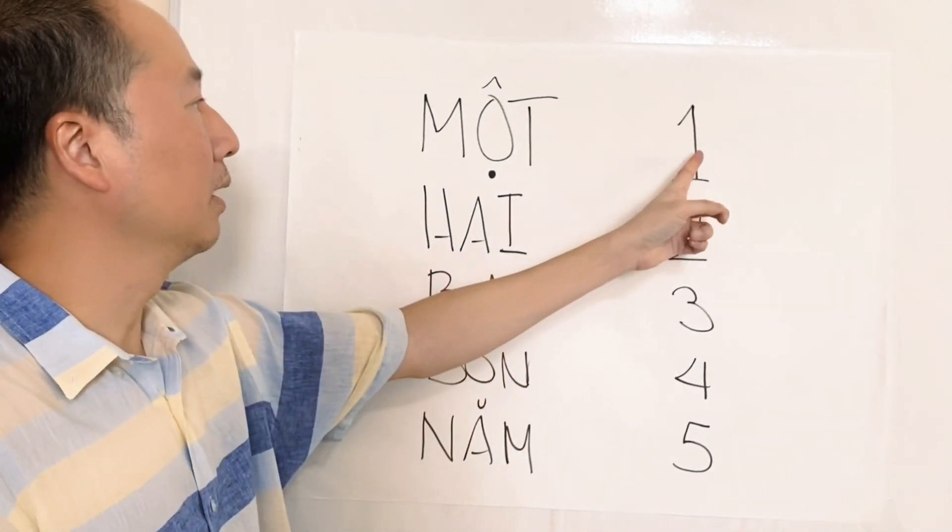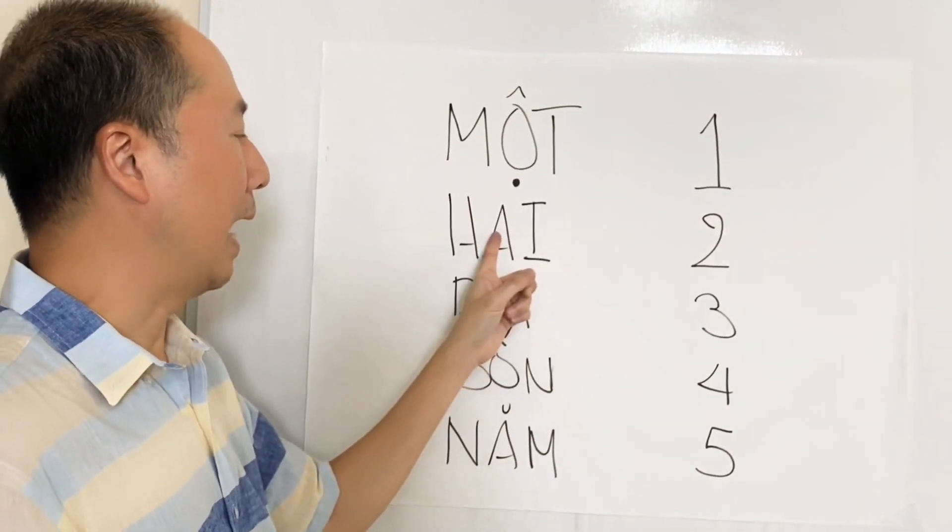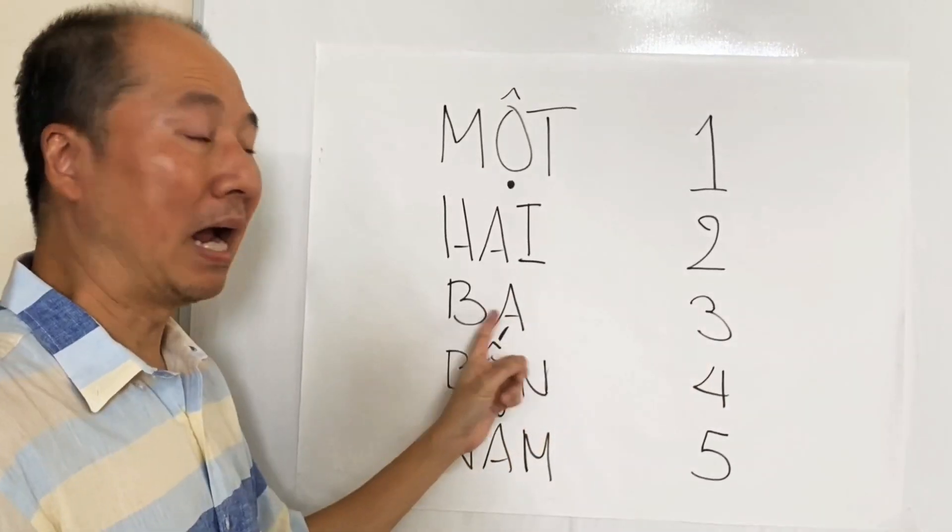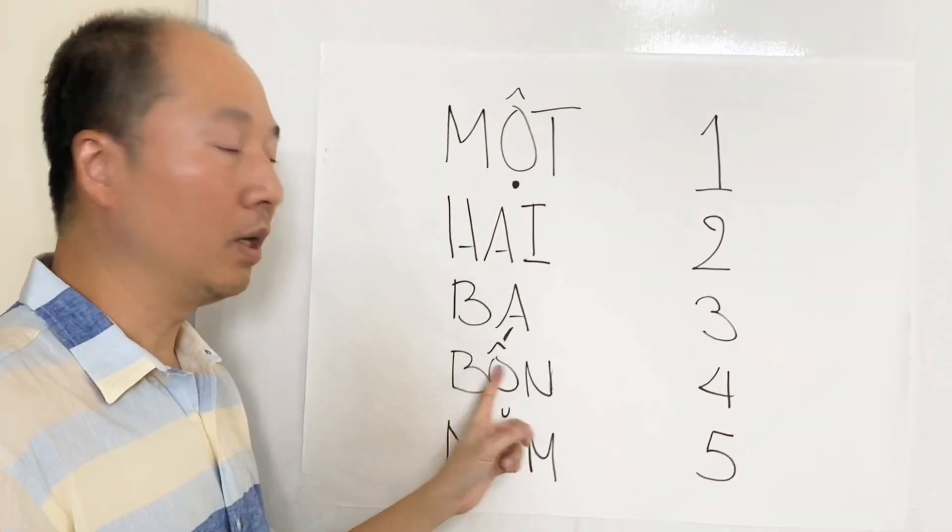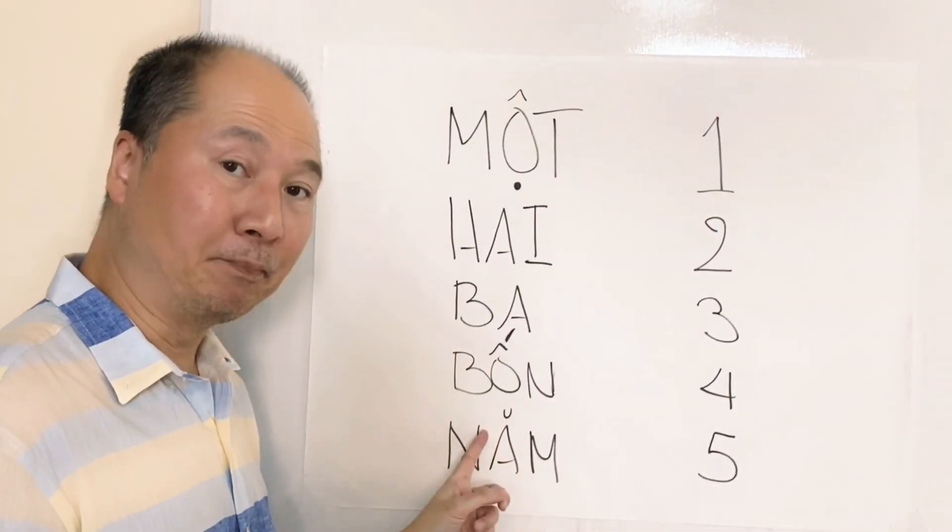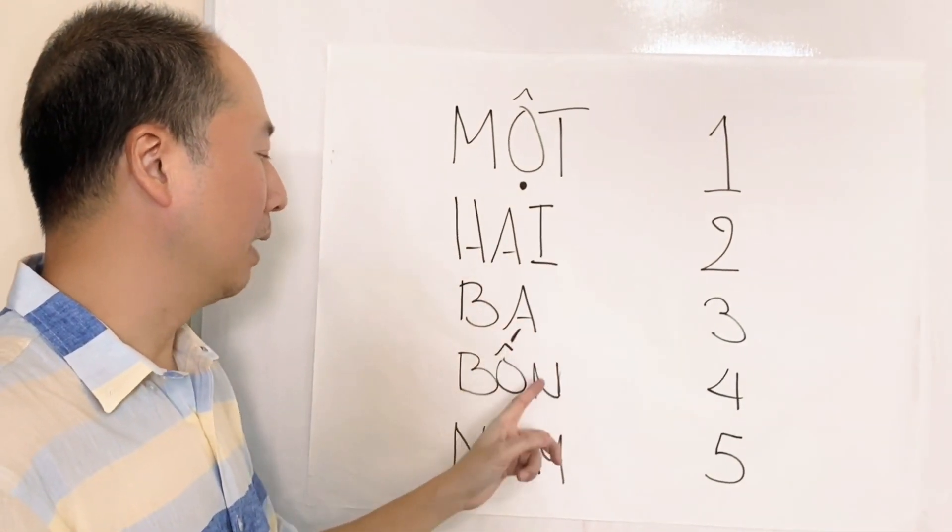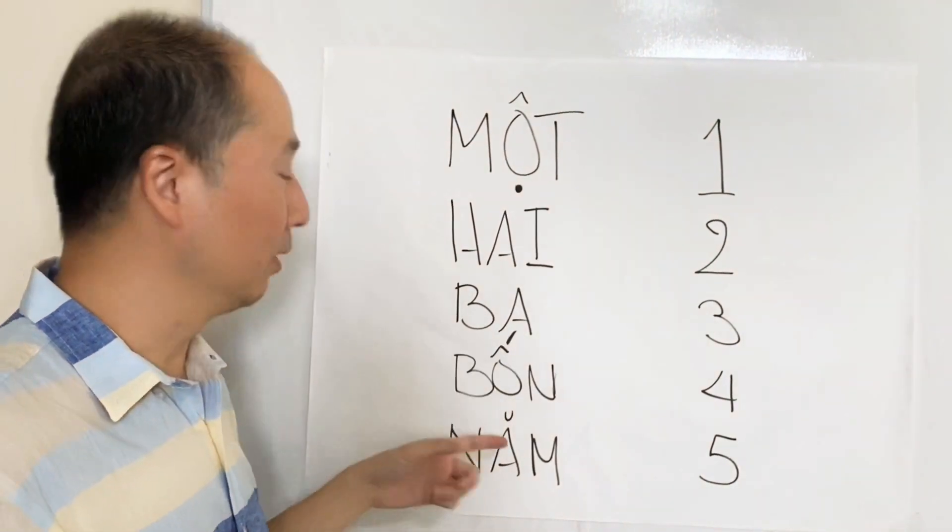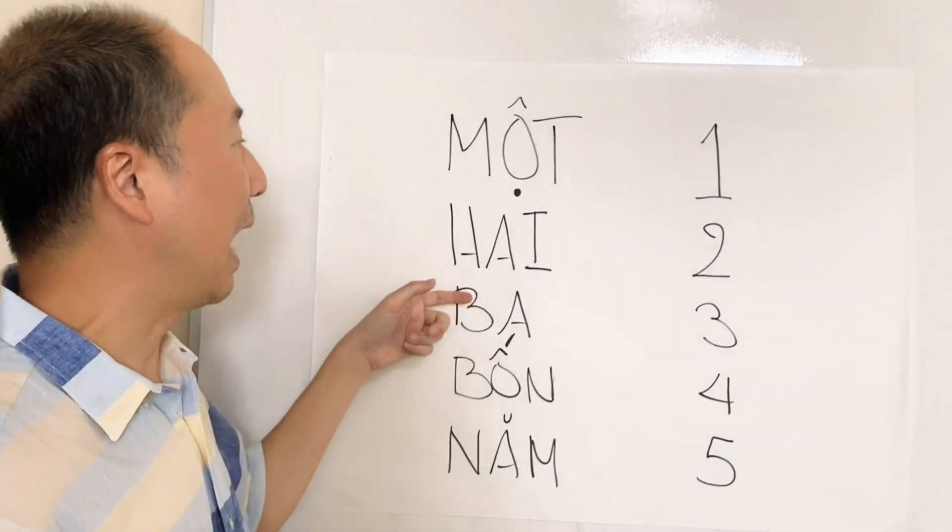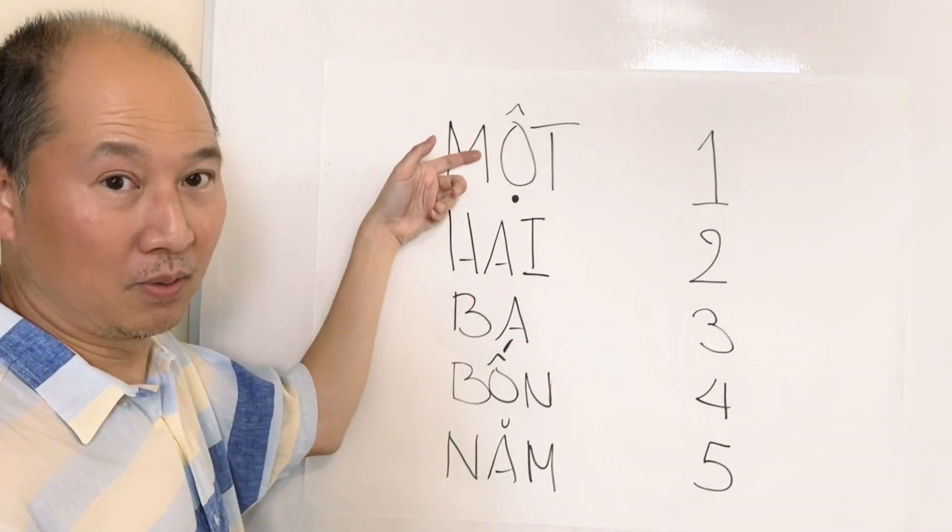One is một, two, hai, three, ba, bốn. If you're counting down, năm, bốn, ba, hai, một.